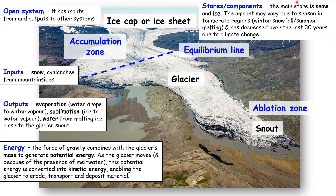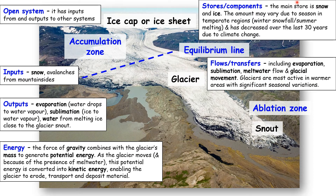Stores and components: the main store is snow and ice, but the amount varies in temperate regions. Because of global warming, it's felt that the amount of snow and ice stored in glaciers is decreasing. In terms of flows and transfers, you have evaporation, sublimation, meltwater flow, and glacial movement. Glaciers are most active in warmer areas with significant seasonal variations, producing a large amount of melting in summer or a large amount of snow and ice accumulation in winter.